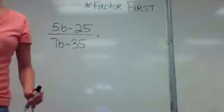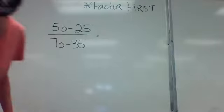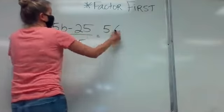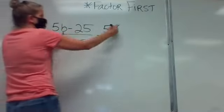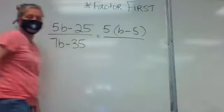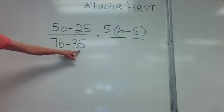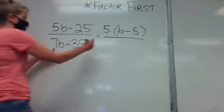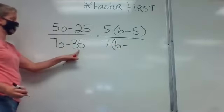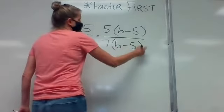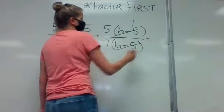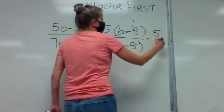Number 13 — same process. Look at the top and bottom separately. In the top, 5 goes into both terms: factor out 5, leaving 5 times b minus 5. In the bottom, 7 goes into both terms: factor out 7, leaving 7 times b minus 5. The b minus 5 factors cancel, leaving 5 over 7.